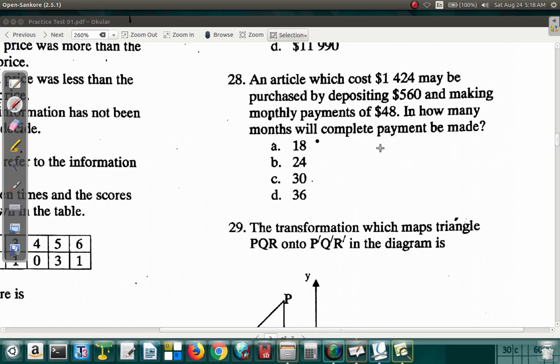Let's see. It costs 1,424. You deposit 560. So take 560 from this to find out how much is left. And then you pay the $48 per month out of it.